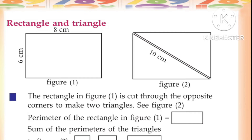Perimeter of the rectangle in figure 1. The perimeter is 2 into (length plus breadth).